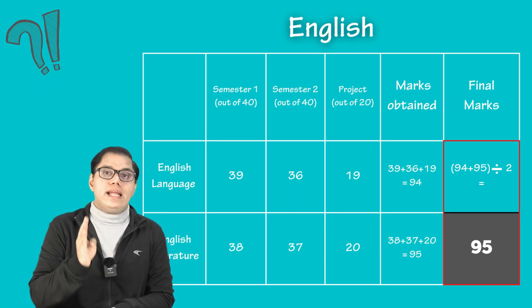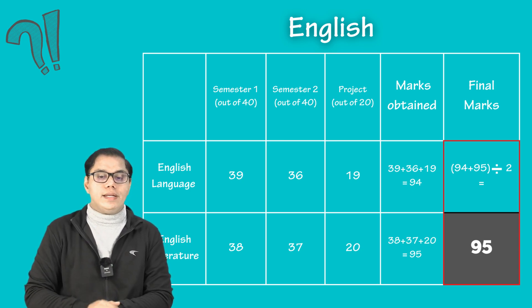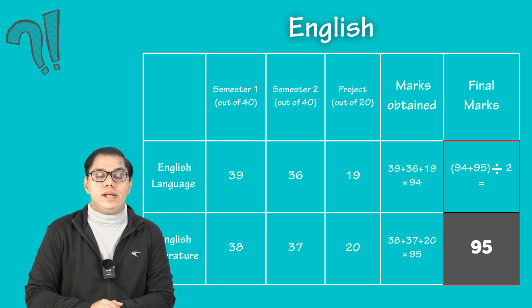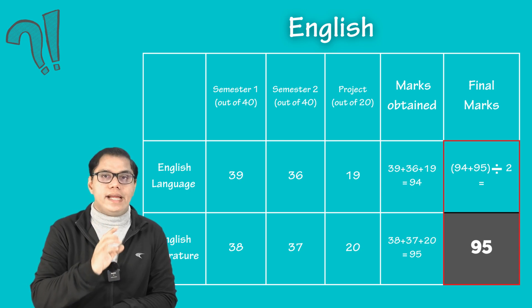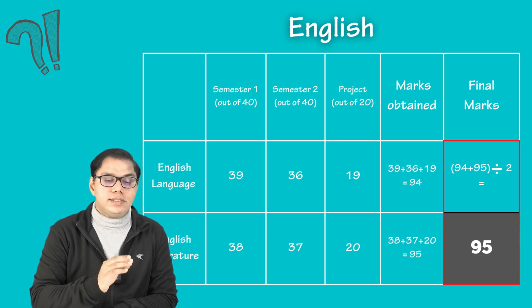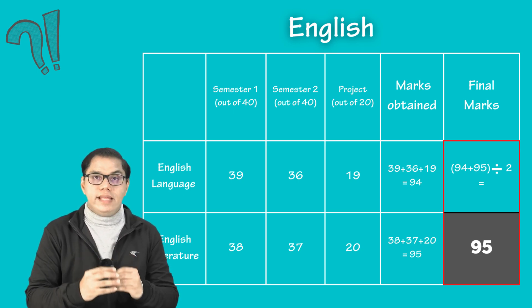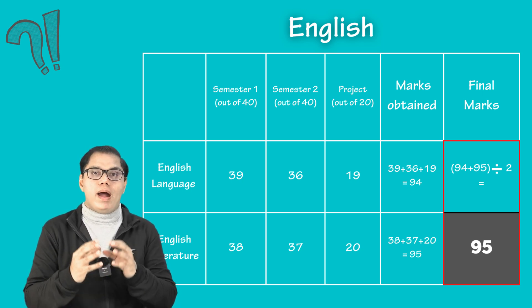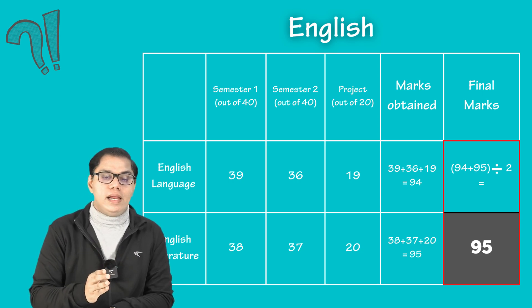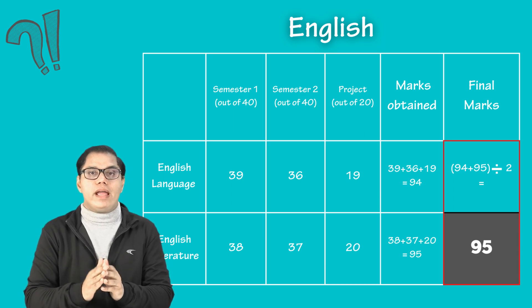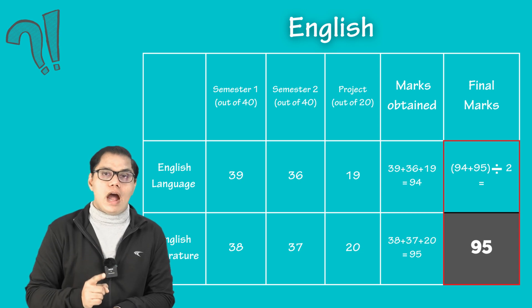Let us say in English language in semester one examination, he has scored 39 out of 40. Then in semester two, he has scored 36 out of 40. Let us move on to English literature. In semester one examination, he has scored 38 out of 40 and in semester two, 37 out of 40. And in project work, he got 20 on 20. So total is 95 out of 100. This English language and literature will be combined and taken as a single subject and marks for English will be 94 plus 95 divided by 2 which comes to 94.5. That means he has scored 95 out of 100 in English.